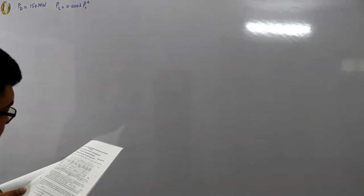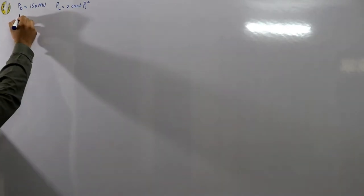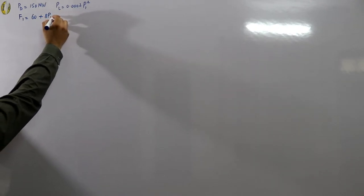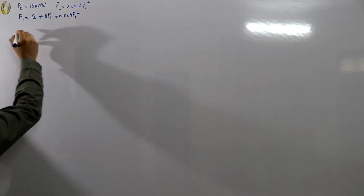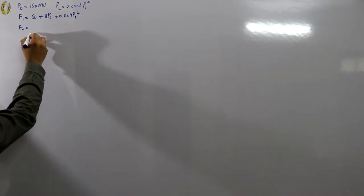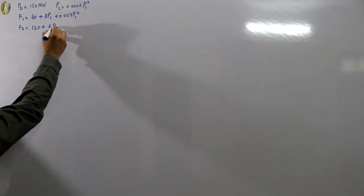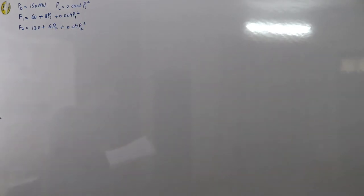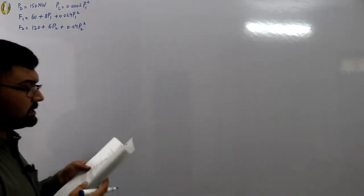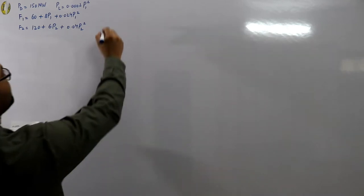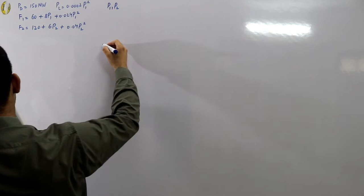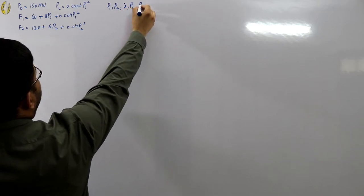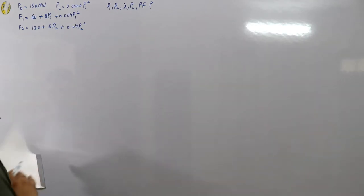The power plants have operational cost models: F1 = 60 + 8P1 + 0.024 P1 squared, and F2 = 120 + 6P2 + 0.04 P2 squared. We need to calculate the optimal power generated by each plant, meaning P1 and P2 are unknown, along with the incremental cost lambda, total power loss PL, and penalty factor PF.